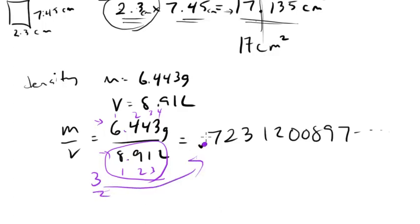So decimals present, we have 1, 2, 3, so we're going to slice off here. We look at the next number and we say, okay, is it 5 to 9, can we round? Oh, no, we just keep it. So the answer here is just going to be 0.723 grams per liter.